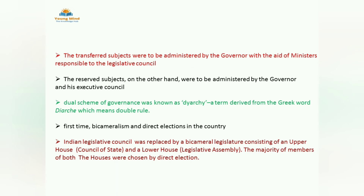For the first time, bicameralism and direct elections were conducted in the country. Till now the Indian Legislative Council was a single house. Now it was replaced by a bicameral legislature: one is the upper house — Council of State — and the other is the lower house — Legislative Assembly. The upper house is what we call Rajya Sabha today.